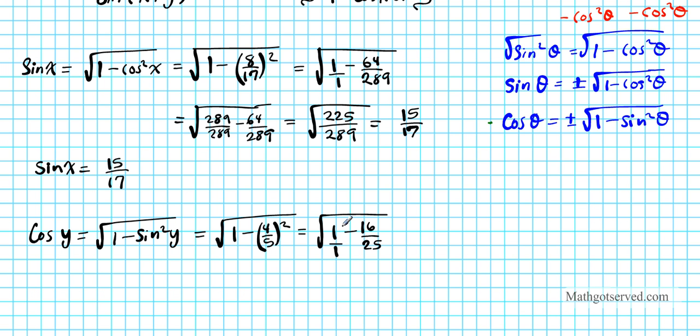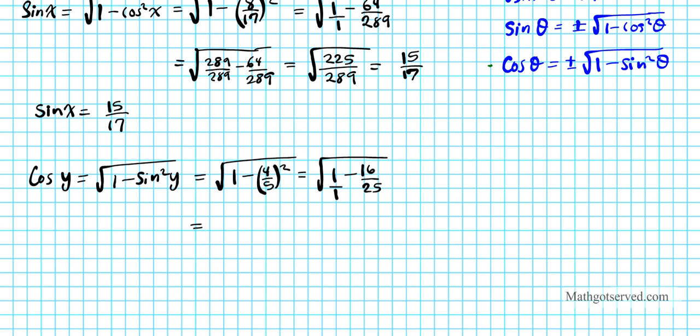That's going to give us the square root of 25/25 - 16/25. When you subtract the top we're going to have 9/25. Take the square root. Notice I didn't put plus or minus here because we're in the first quadrant. When I root the top I get 3, I root the bottom I get 5. So 3/5 is what cos y is. Cos y equals 3/5.